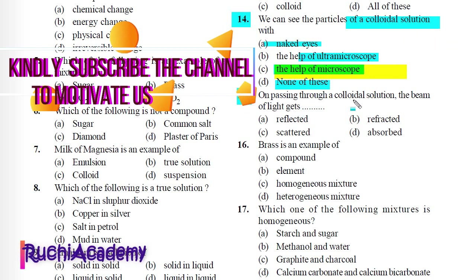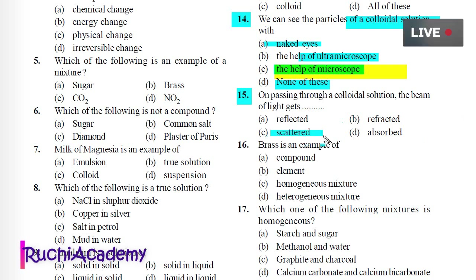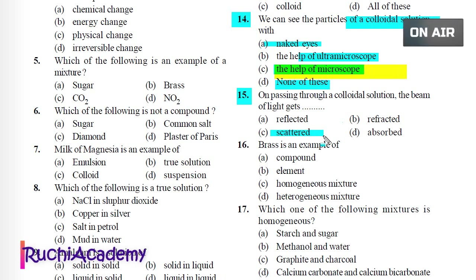Question 15: On passing through a colloidal solution, the beam of light gets: A) Reflected, B) Reflected, C) Scattered, D) Absorbed. Correct answer is C) Scattered. This is due to scattering of light by colloidal particles, called the Tyndall effect.